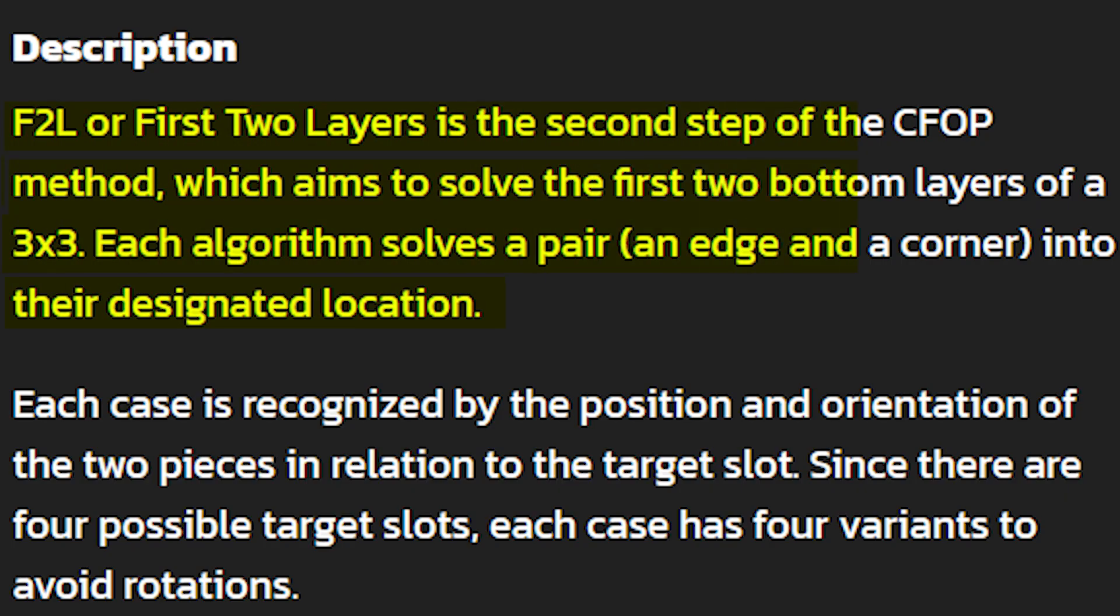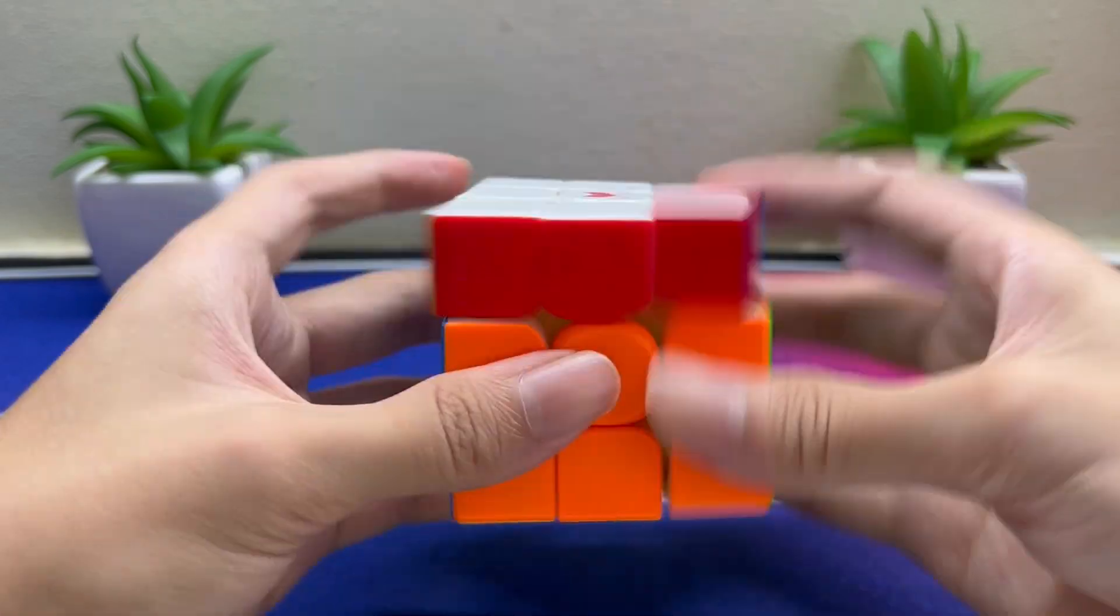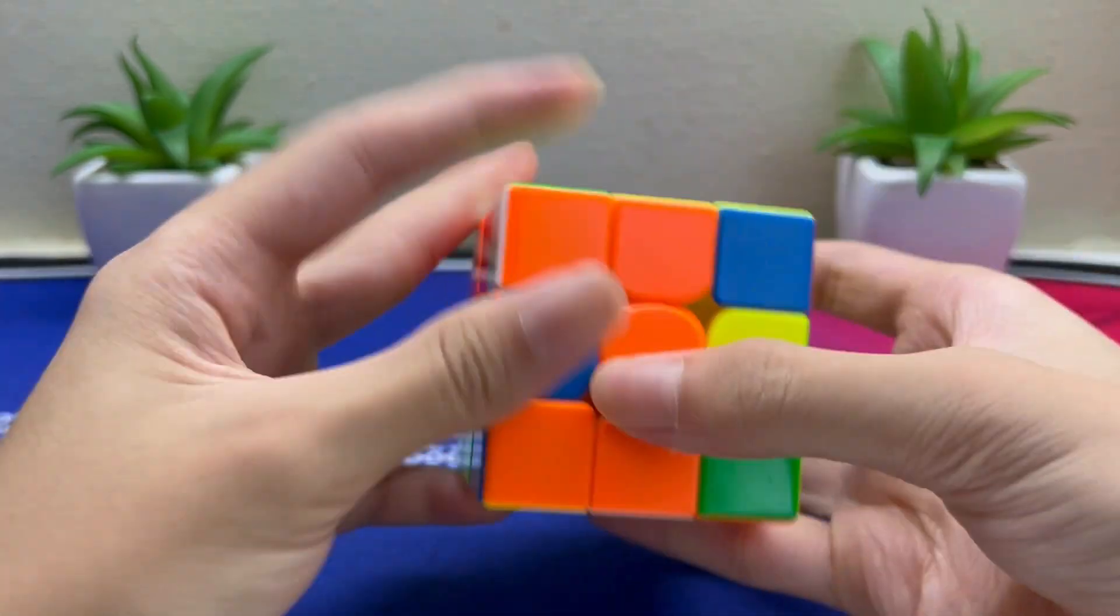F2L is probably the most important thing to master in order to get fast at the Rubik's cube. I average 13 seconds, and F2L alone usually takes me 7-8 seconds, which is basically half of my solve.